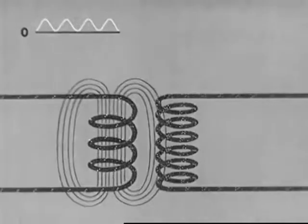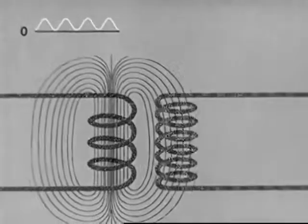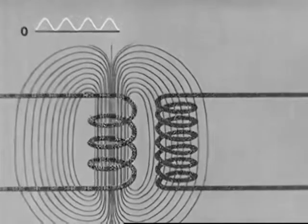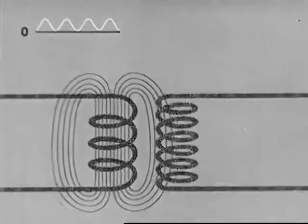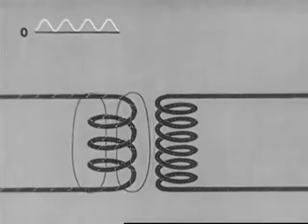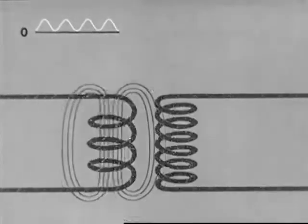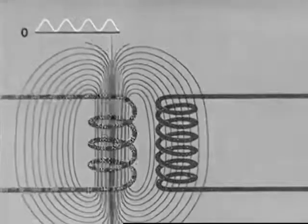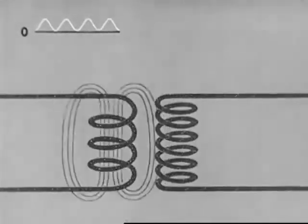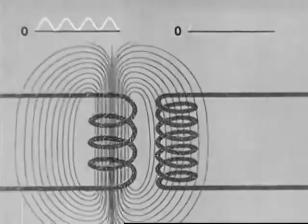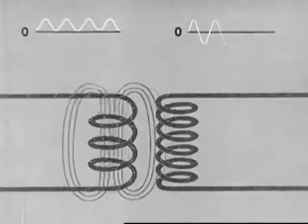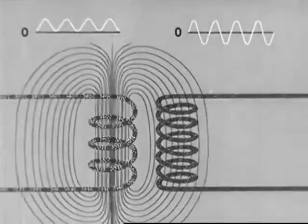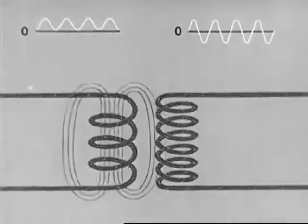When the magnetic field builds up, the secondary current flows in one direction. A current which flows in one direction and then reverses to flow in the other direction is called an alternating current. At the top, we now trace out a curve to represent the alternating current in the secondary. When the curve crosses the zero line, it shows that the current is changing direction.